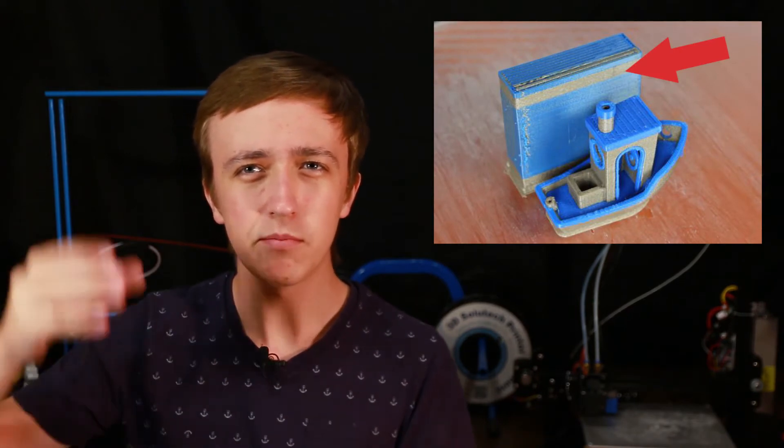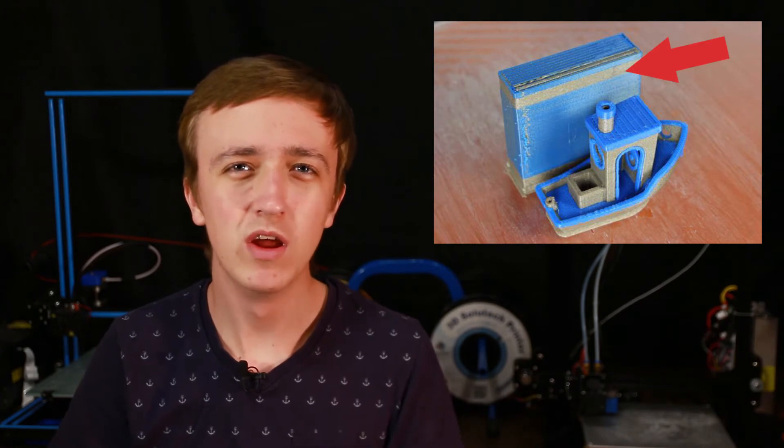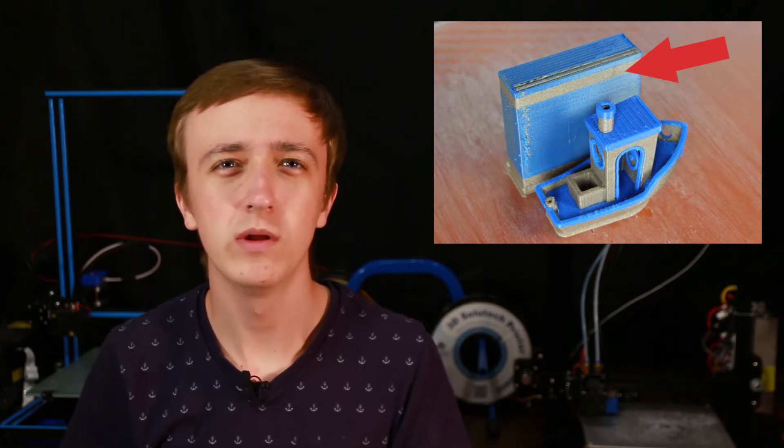So you retract the material you're printing with and then you go in with the new material and then what you have to do is prime the nozzle because it's still gonna have some of the old material in there. And that's where the prime tower comes in. That's basically just a little separate tower that it prints where just every time the color gets switched it prints a bit of material so that there is none of the old one left.